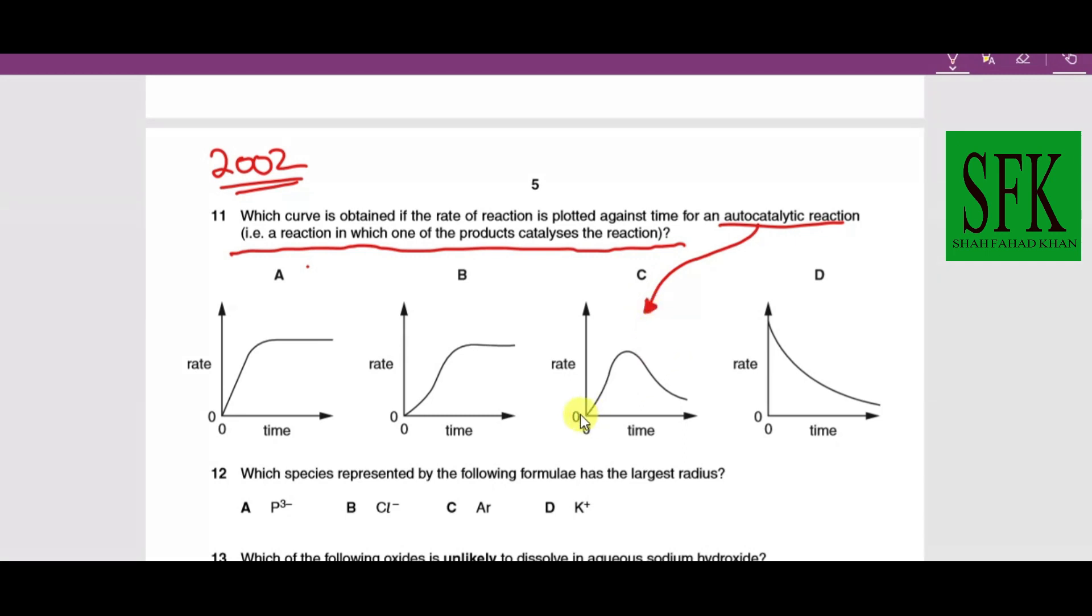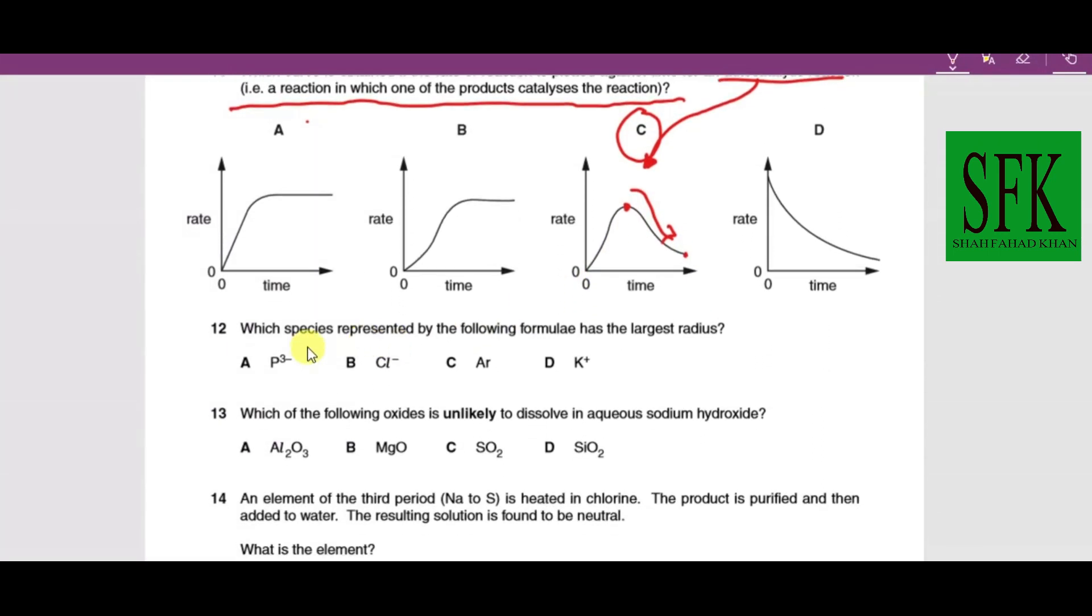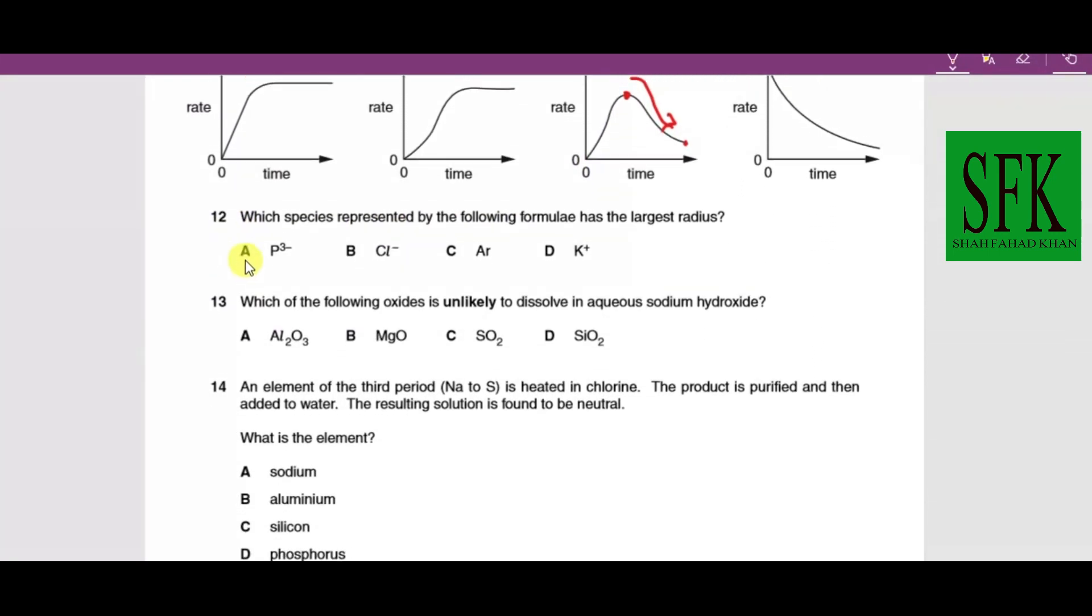For an auto catalytic reaction, the graph keeps on increasing until it reaches a maximum value. After reaching the maximum value it decreases back but does not approach zero. So option C is correct. I would suggest just learn this graph for auto catalytic reactions—it doesn't change.